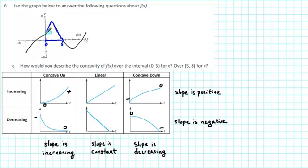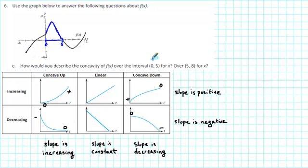We notice that the function is increasing, then it levels off, and then it's decreasing. But the most important thing regarding concavity is that the curve is curving in a downward direction. We have positive slope, then zero slope, then negative slope — the slope is decreasing, and therefore the function is concave down on this interval. So on the interval from 0 to 5, the graph is concave down.